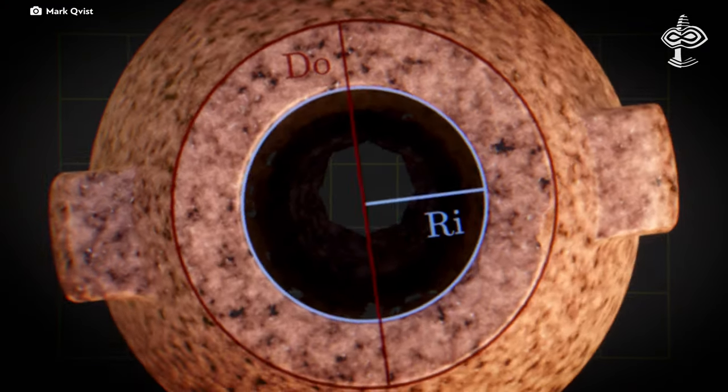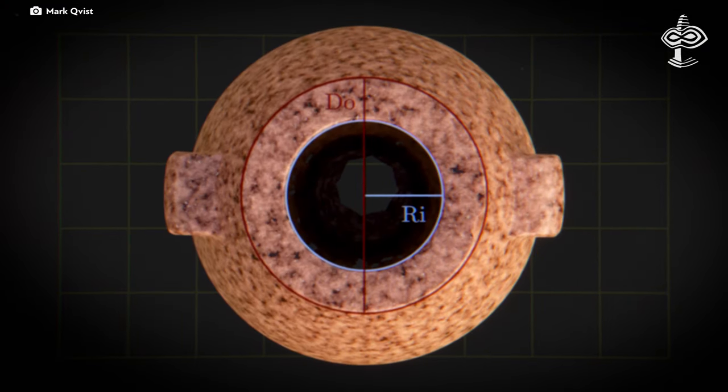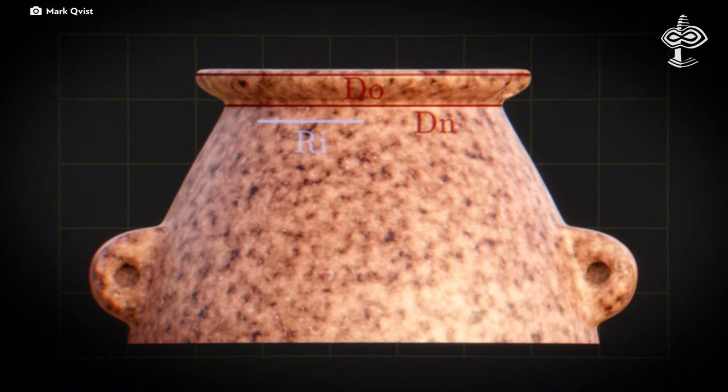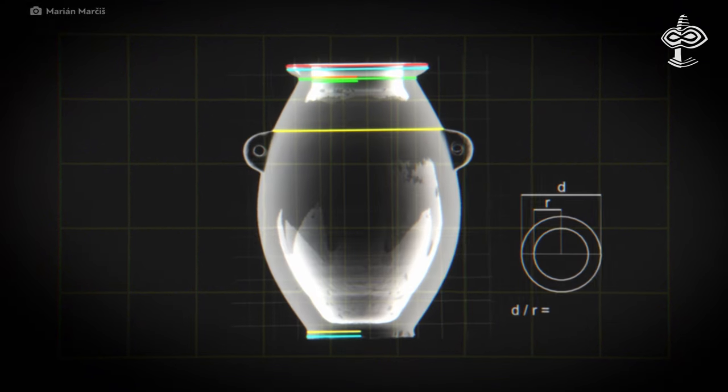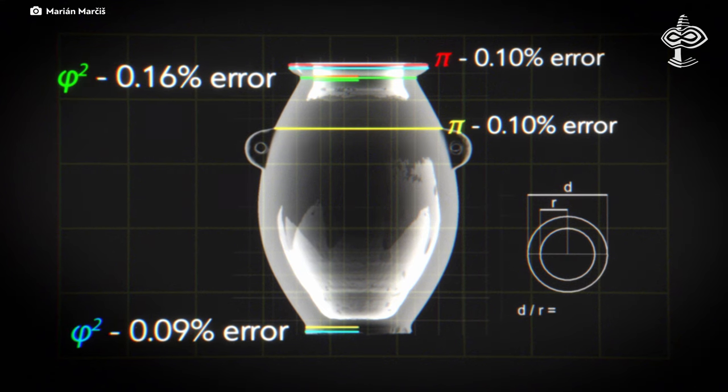The creators needed accurate approximations of pi, the ratio of a circle's circumference to its diameter, for practical calculations. They also precisely incorporated the golden ratio at a microscopic scale in one of the toughest materials to work with.